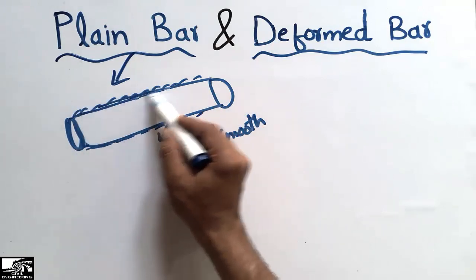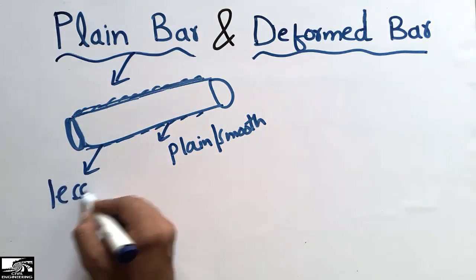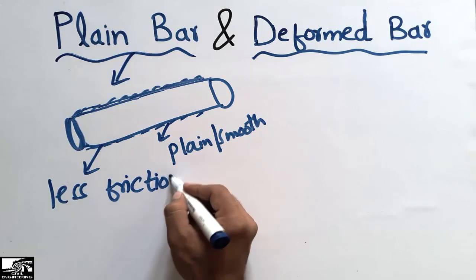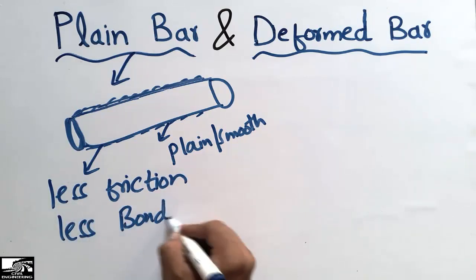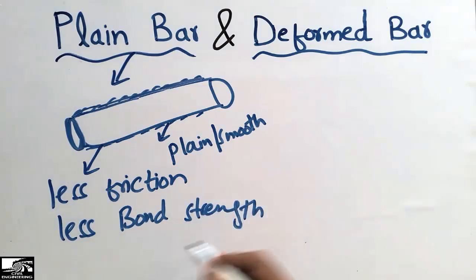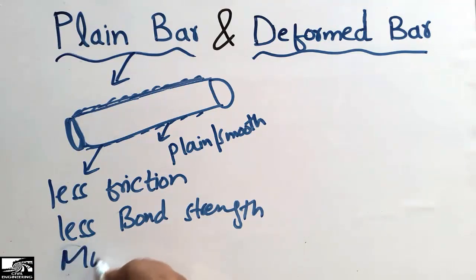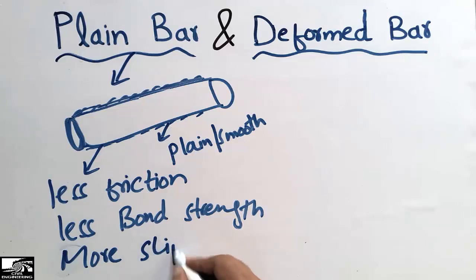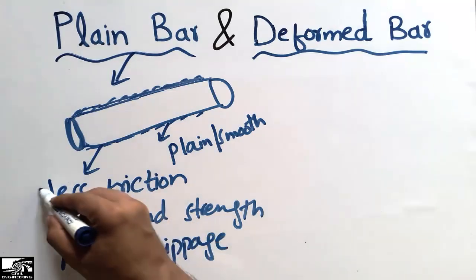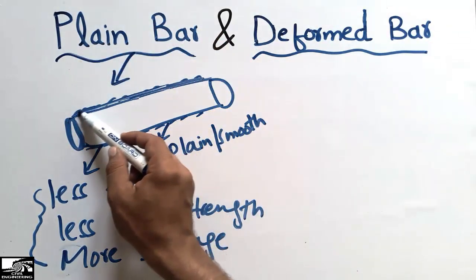Due to these smooth surfaces, plain bars have less friction between the concrete and the reinforcement. They also have less bond strength between the concrete and the steel, and they have more slippage — the steel bar can easily slip within the concrete.